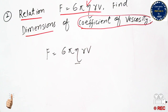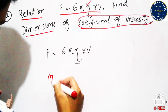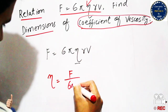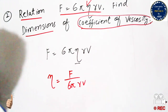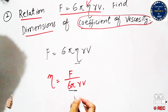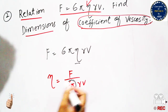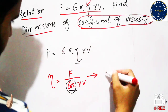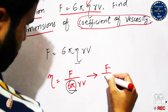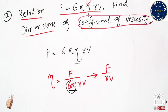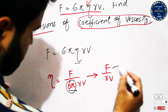Rearranging, eta equals force divided by 6π·r·v. Since 6 and π are constant quantities, they are not included in units or dimensions. So the relevant expression becomes force divided by r times v.